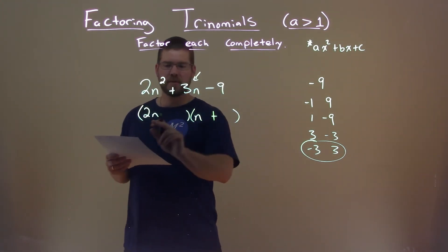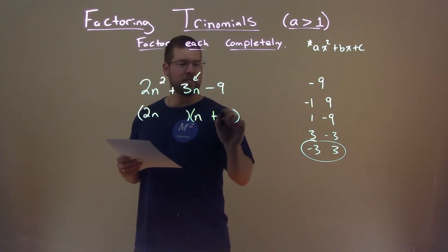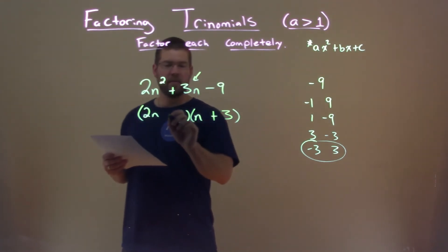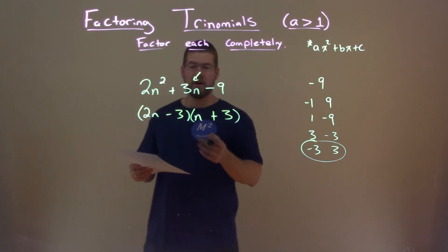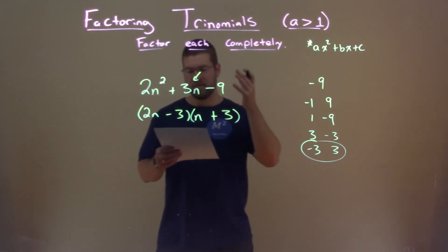So if we have 2 times positive 3, we get 6. And then we have a minus 3 here. 6 minus 3 gives me a positive 3n, and we're good. And we have actually now factored this completely.